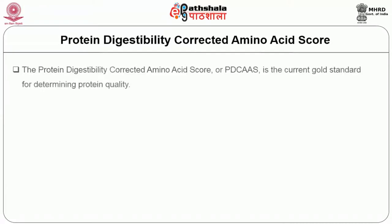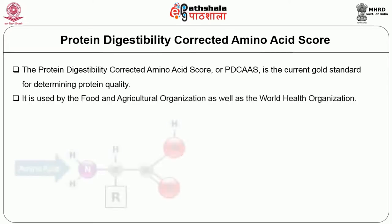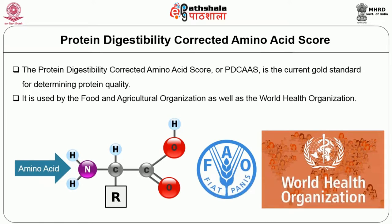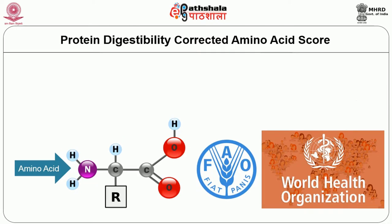The PDCAAS — Protein Digestibility Corrected Amino Acid Score — is the gold standard for determining protein quality. It is used by the Food and Agriculture Organization (FAO) and the World Health Organization (WHO) for determining protein quality. They have compared other protein quality evaluation methods and concluded that the PDCAAS method is the best and can be considered as a gold standard.